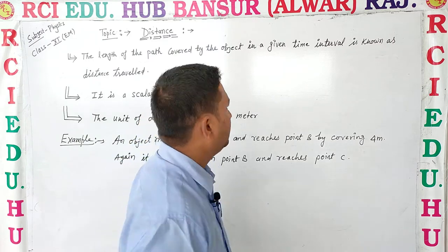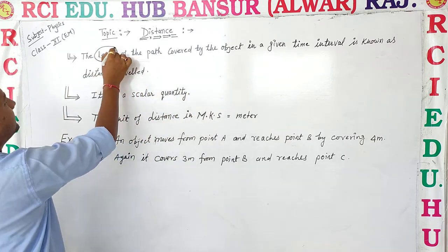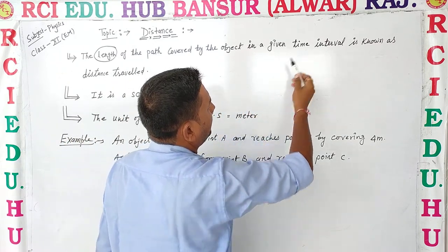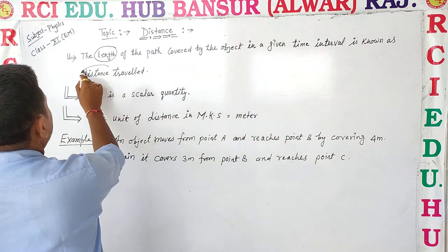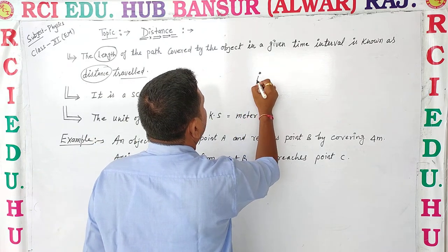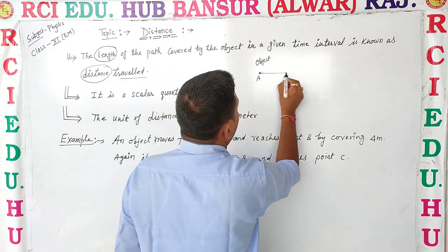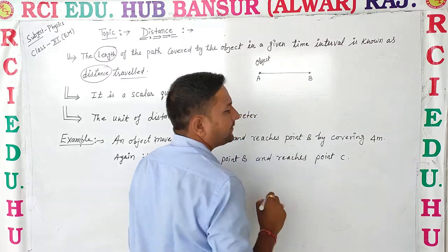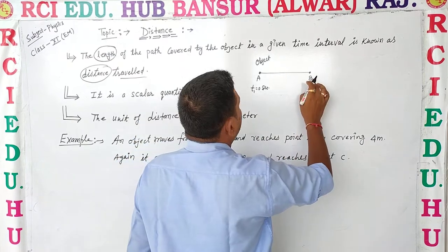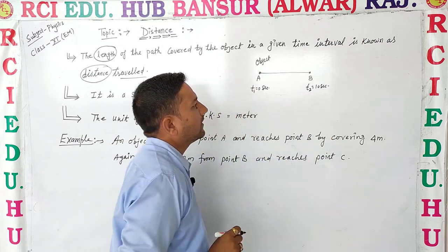The definition of distance is: the length of the path covered by the object in a given time interval is known as distance travelled. For example, one person travels in a direction and reaches point B from point A.